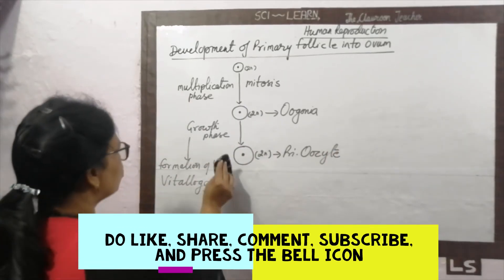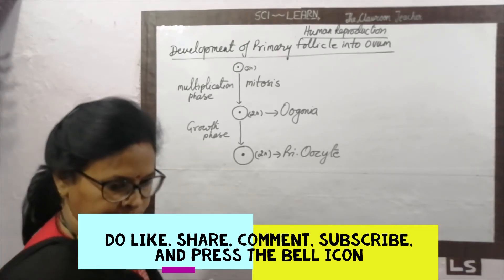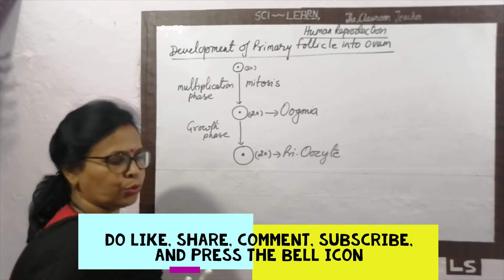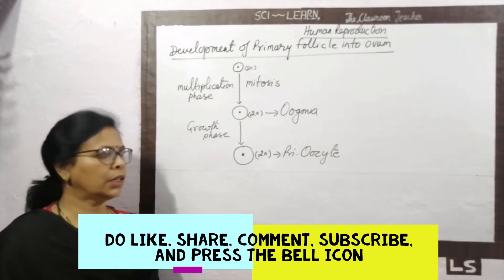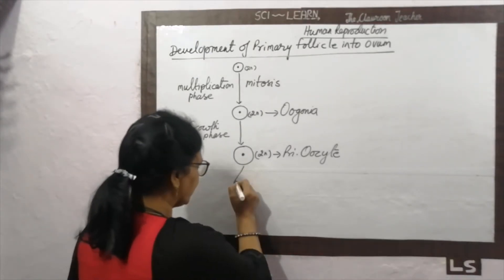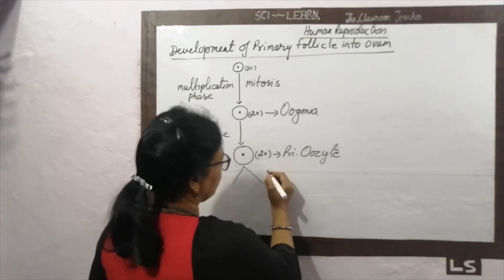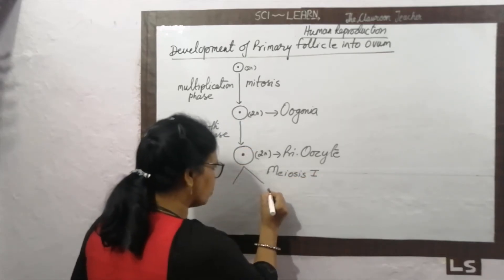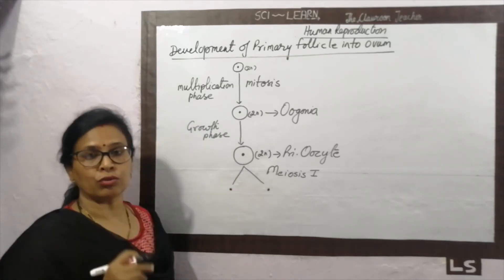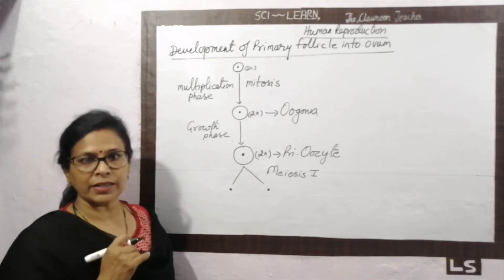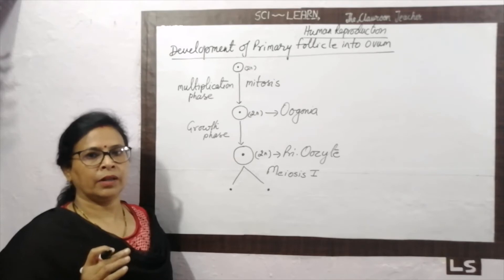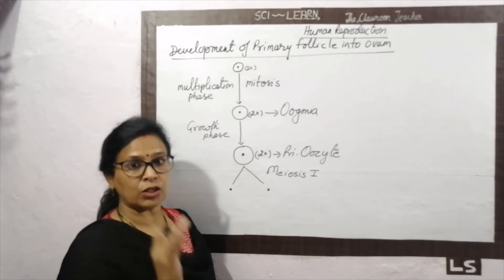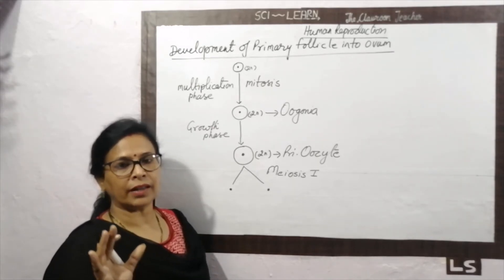The primary oocyte then moves towards the maturation phase, where the cell gets mature. In the maturation phase, meiosis division occurs. The cell is divided into 2 due to meiosis 1. Nuclear division — karyokinesis — takes place first, then cytoplasmic division. Prophase 1 is the longest stage of any cell division, completed in five steps.